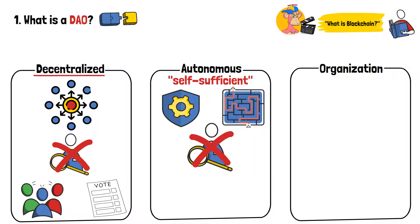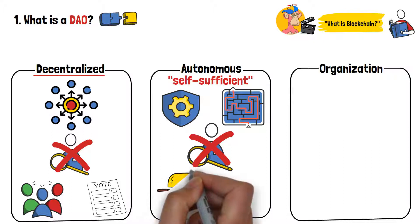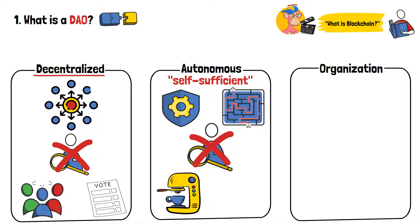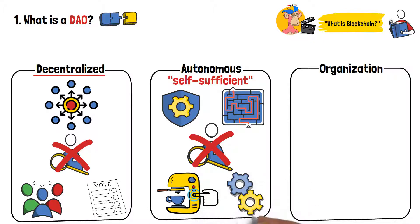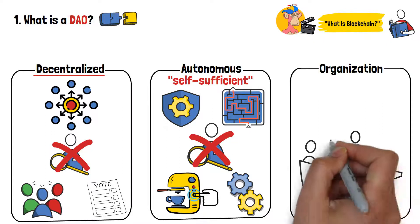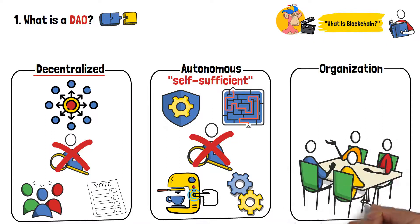Autonomous is a fancy way of saying self-sufficient. This refers to a system being able to complete certain processes without someone else intervening and having to manually complete the process. Here, you can simply think about the earlier mentioned coffee machine example. Once you press the button, you don't need to push and pull any more levers, or grind the coffee beans by hand. The machine does all the work for you, in an automatic manner.